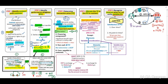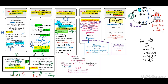The first aspect is variable consideration. The next is the financing component: if a contract entitles either the customer or the entity to a significant (material) benefit, this becomes a significant financing component and you must calculate the present value of that transaction. However, per paragraph 63, if the period between the transaction date and when the entity receives consideration is less than one year, you do not need to account for the significant financing component.